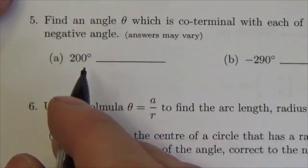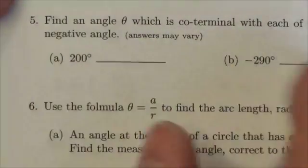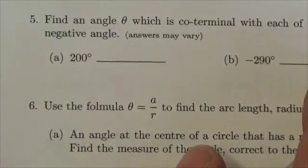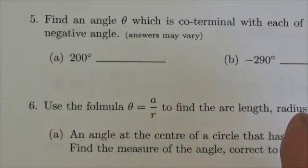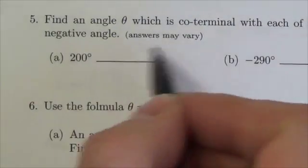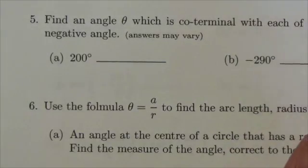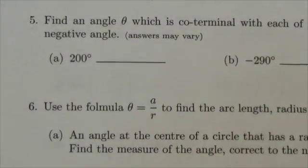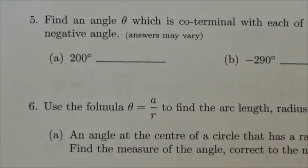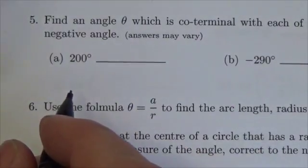This question is asking us to find co-terminal angles to the angles that are provided in the question. It's asking us to provide one positive and one negative co-terminal angle. Now it says here that the answers may vary, but the truth is they might vary, but it's not likely they're going to vary by very much here. I think most of us are going to do this the same way.